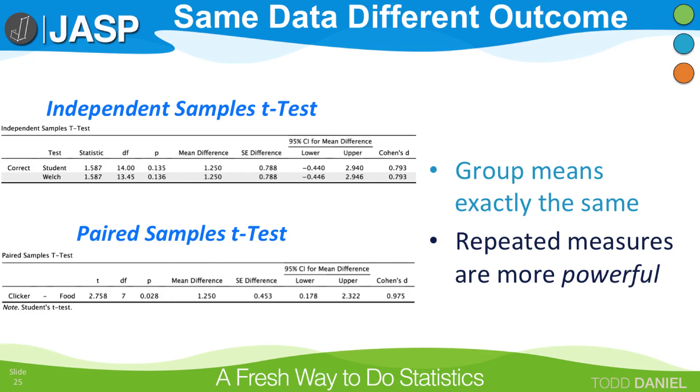This illustrates that a paired samples t-test, and repeated measures in general, is more powerful than an independent samples t-test. That means that we are more likely to find a statistically significant difference between the groups. That does not mean that there's anything wrong with using an independent samples t-test, only that you should consider the power of your test when you do your research design.